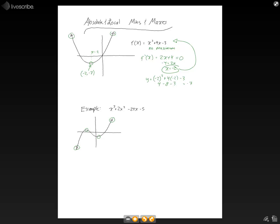So let's take a look. We're going to take the derivative of this function, f prime of x equals 3x squared plus 4x minus 24, and we're going to set that equal to 0 and solve for x.